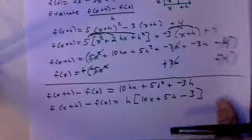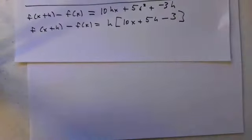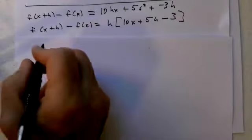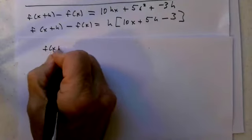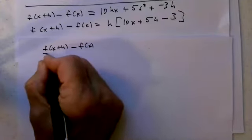Now where do I go next? I want to do f(x+h) minus f(x) all over h. So we're here. What is f(x+h) minus f(x) all over h?